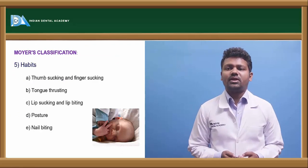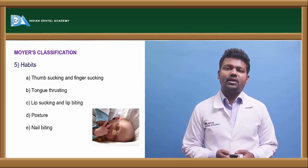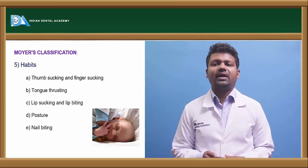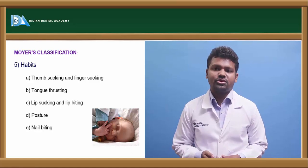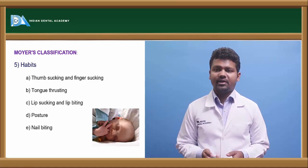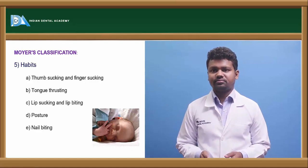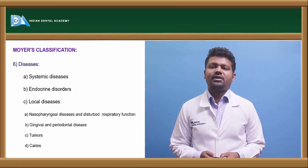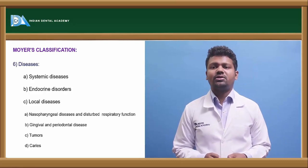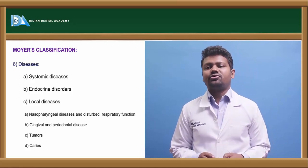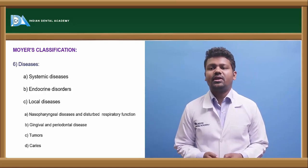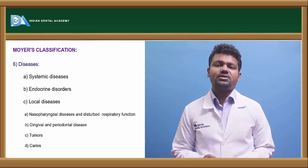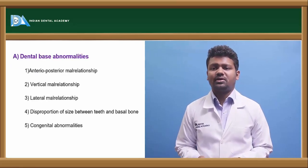Fifth is habit: thumb sucking and finger sucking habits, tongue thrusting habits, lip sucking and lip biting habits, postures, and nail biting habits. Sixth is disease — systemic disease, endocrine disorders, local diseases, nasopharyngeal disease and disturbed respiratory function, gingival and periodontal diseases, tumours, and caries.